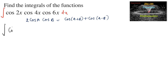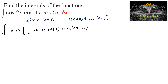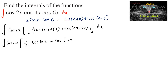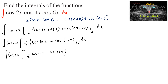We can write the integral as cos(2x) times (1/2)[cos(4x+6x) + cos(4x-6x)] dx, which equals the integral of cos(2x)·(1/2)[cos(10x) + cos(4x-6x)]. Since 4x-6x = -2x, and cos(-θ) = cos(θ), this simplifies to cos(2x)·(1/2)[cos(10x) + cos(2x)] dx.